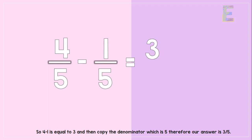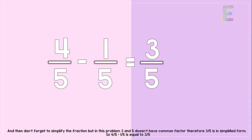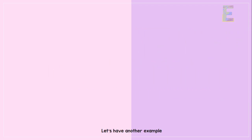Copy the denominator which is 5, therefore our answer is 3 over 5. Don't forget to simplify the fraction, but in this problem 3 and 5 don't have a common factor, therefore 3 over 5 is already in simplified form. So 4 over 5 minus 1 over 5 is equal to 3 over 5.